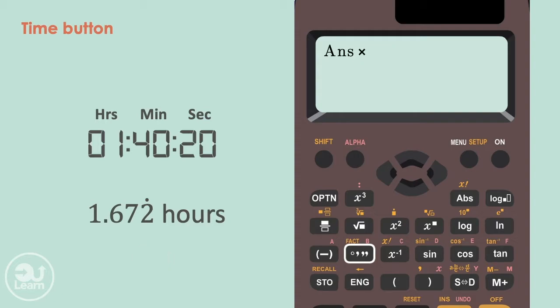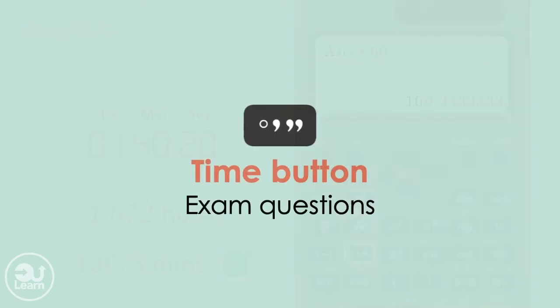What if we wanted to know how many minutes this is? We simply multiply this decimal by 60, and press equals. After, press the time button, and now we have our time in minutes. Let me show you a couple of questions of how this button can be used in an exam setting.